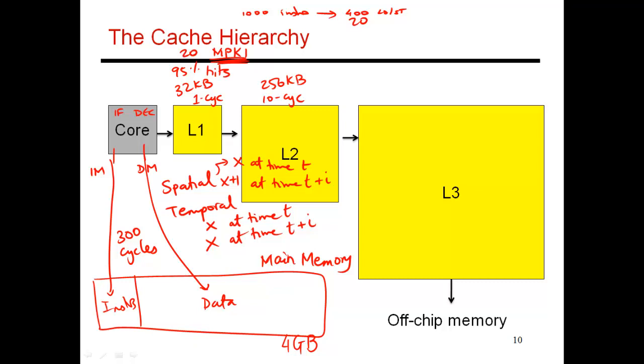All right, so the L2 is going to receive 20 requests every 1,000 instructions. And out of those, it might correctly respond with 10 of them. And 10 of those might be misses. So this results in an MPKI of 10. So for every 1,000 instructions executed on the processor, 10 of them end up being misses in the L2.